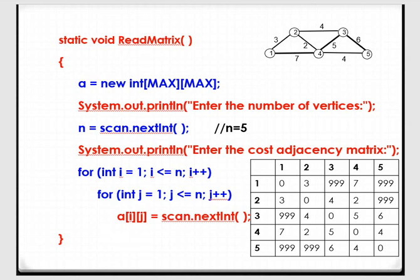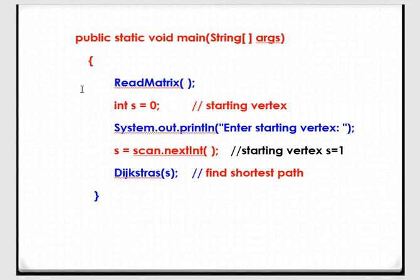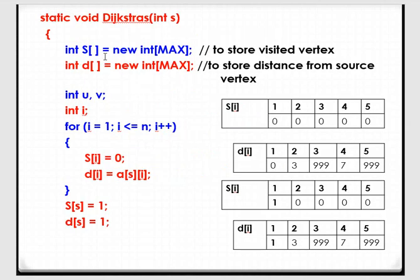Once we are done with reading, go back to your main function. After readMatrix, we just need to choose a starting vertex in the given graph. Here we are going to read the starting vertex. Afterwards, we are going to call the dijkstra function. Inside the dijkstra function, we are going to declare two arrays. The first one, S, indicates whether vertices are visited or not — we use S to check that.